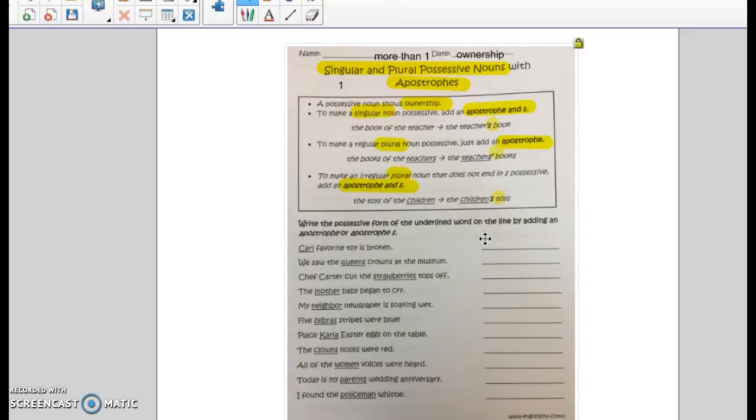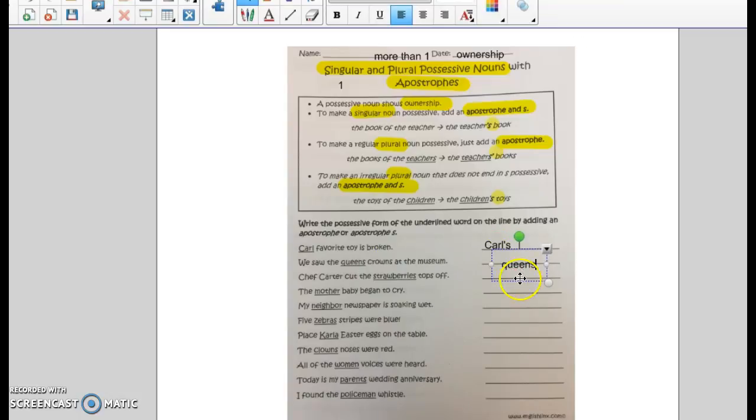We have Carl favorite toy is broken. Carl owns the toy. So to show that, we have Carl apostrophe S. Number two, we saw the queen's crown at the museum. Oh, I'm sorry, the queens' crowns. They are talking about more than one queen. So we already have the S on the end. Therefore, you just add an apostrophe to show that it's more than one queen that we are talking about.